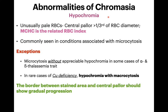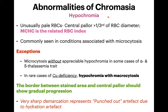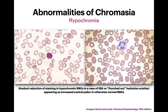Regarding the hydration artifact discussed last time: the border between the stained area and central pallor should show gradual progression — lightly stained centrally, becoming progressively darker toward the periphery. This is very different from the punched-out appearance of the hydration artifact, which shows very sharply demarcated areas of hypochromia with abrupt transitions.